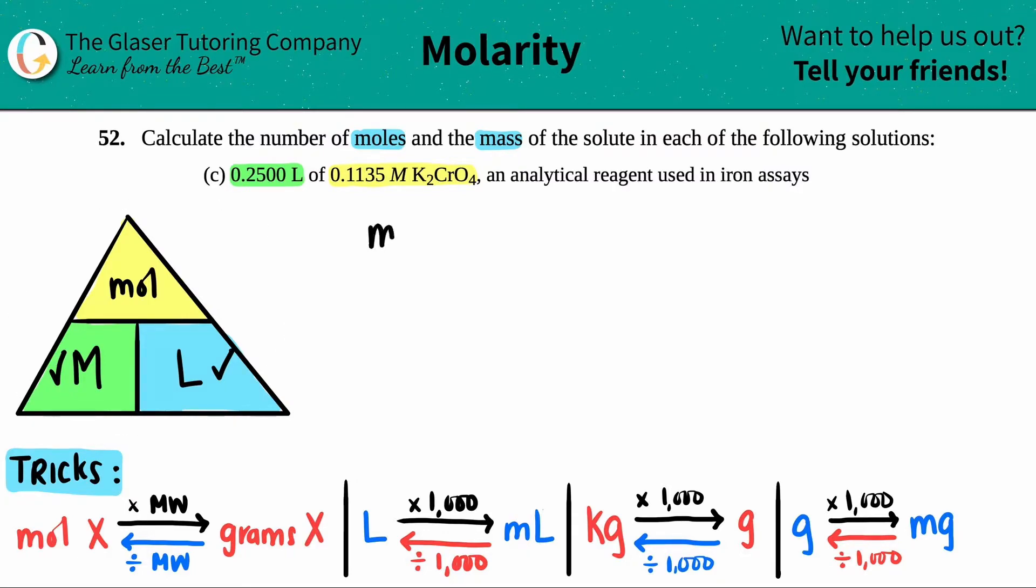Now I just go back and I say, what did they give me? They gave me a liter, so I have this value. They gave me a molarity, so I have this value. So I have two out of the three. I can automatically solve for the one that I don't have. So now how do I construct a formula out of this little diagram? Well, write the one that you're looking for.